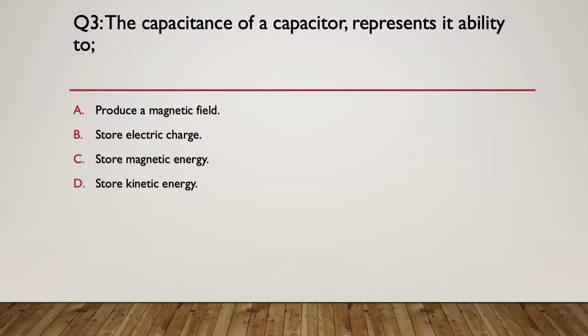The capacitance of a capacitor represents its ability to do what? A, produce a magnetic field. B, store electric charge. C, store magnetic energy. C, or D, store kinetic energy. So, pause here while you think about it.